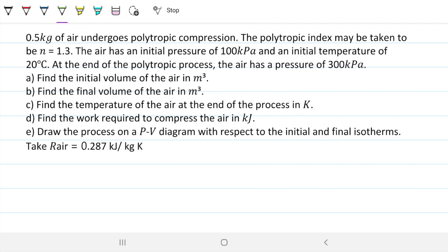Problem statement reads: 0.5 kilograms of air undergoes polytropic compression. The polytropic index may be taken to be n = 1.3. The air has an initial pressure of 100 kPa and an initial temperature of 20°C. At the end of the polytropic process, the air has a pressure of 300 kPa. We are to find the initial volume of the air in m³, find the final volume of the air in m³, find the temperature of the air at the end of the process in Kelvin, find the work required to compress the air in kilojoules, and draw the process on a PV diagram with respect to initial and final isotherms.